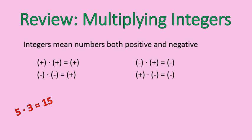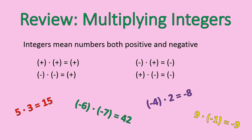Here are a couple of examples. 5 times 3, positive times a positive, gives you positive 15. Negative 6 times negative 7 gives you positive 42. Negative 4 times positive 2 gives you negative 8. And 9 times negative 1 gives you negative 9. So there's just an example of each type so that you can see there along the bottom.